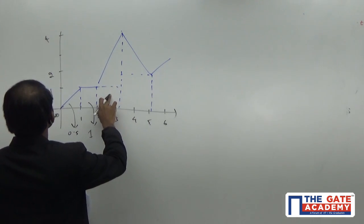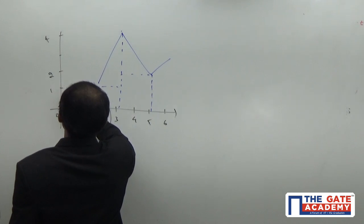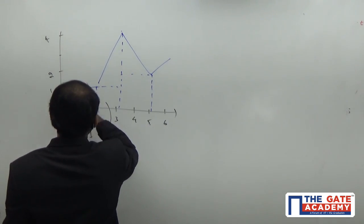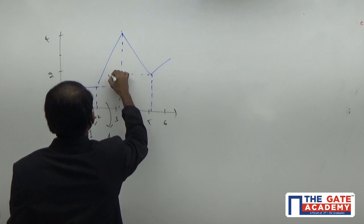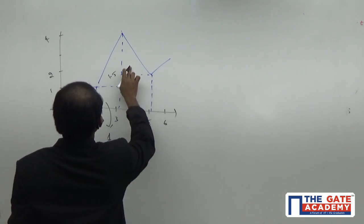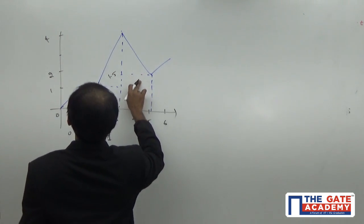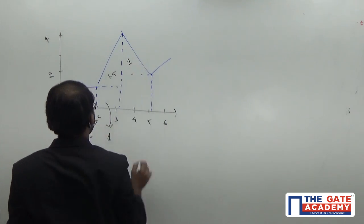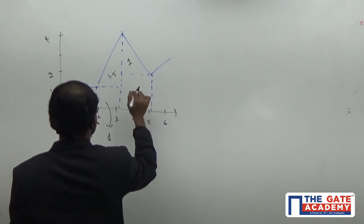For this one, half into 1 into 4 minus 3, 4 minus 1, it is 3, half into 1 into 3. So, it will become 1.5 and this will become half into 2 into 2. So, this is also equal to 1 and 2 into 2 here, this will become 4.